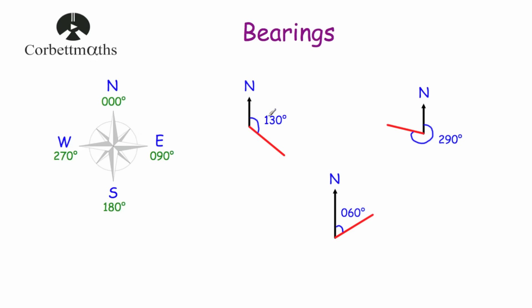Now what we're going to do is look at some examples and questions. We're going to focus on questions where we've been asked to measure the bearing of one position from another. We're also then going to do questions where we've been asked to show a location if we've been given the bearing and the distance. Let's have a look at our first question.